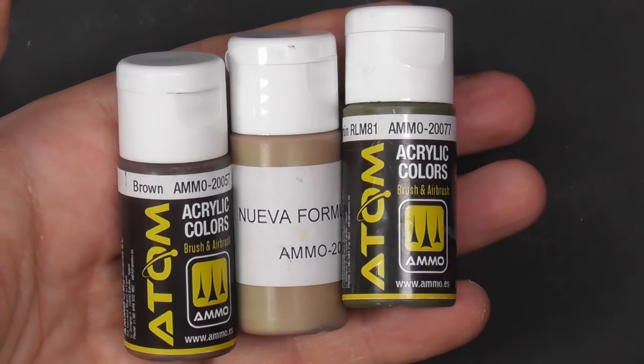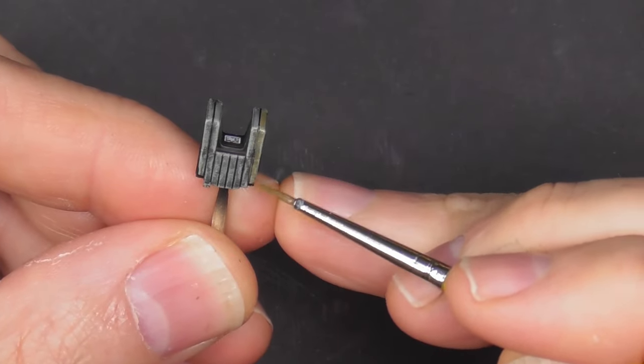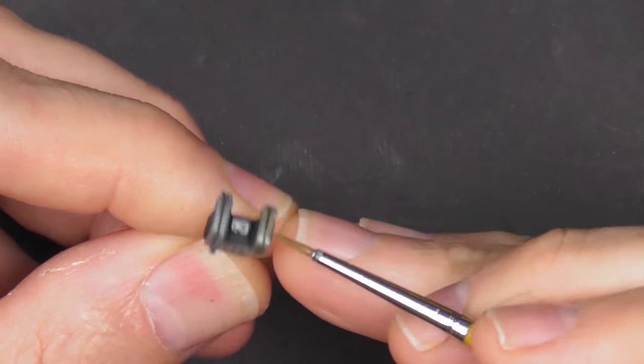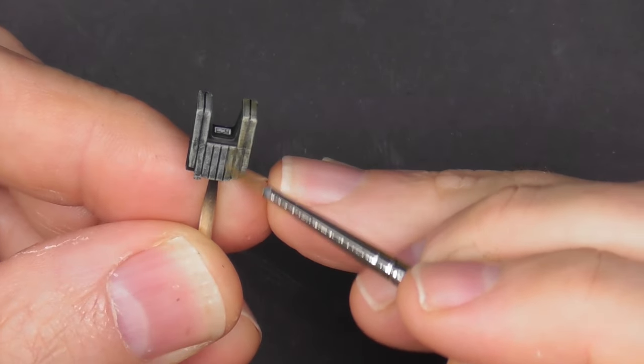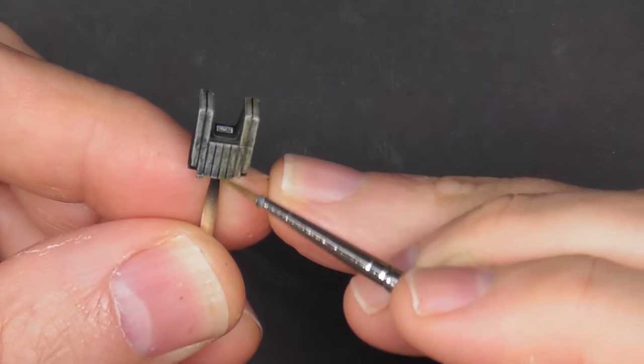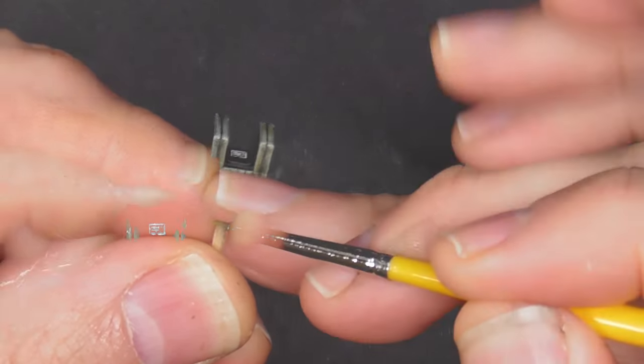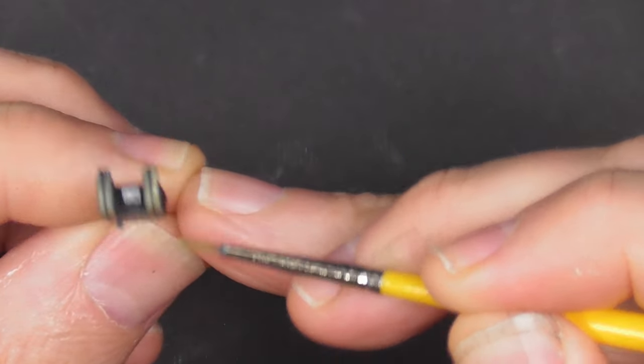So these are the paints I'm going to be using. These are the new Atom paints and I thinned it with water. It's really good acrylic paint. As you can see this is a prototype. But by the time you watch this, the new Atom range will be out.